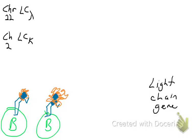Let's continue talking about somatic recombination that gives rise to antibody diversity. Now we're going to talk about the light-chain gene. The light-chain gene must give rise to the light-chain protein, and it's going to have diversity in it, which means you can have different possible light-chain proteins.